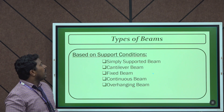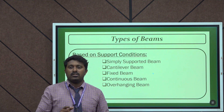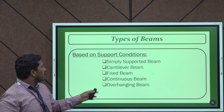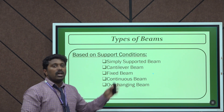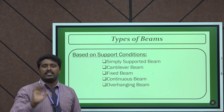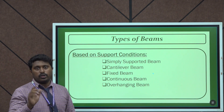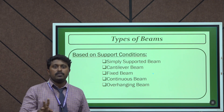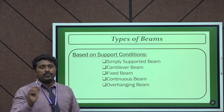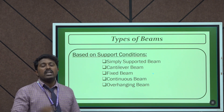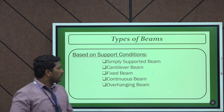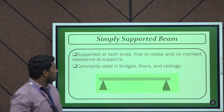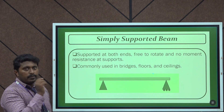The next classification is based on support conditions, which is the most commonly considered type in the engineering field. Based on support conditions, beams are classified into five categories: simply supported beam, cantilever beam, fixed beam, continuous beam, and overhanging beam. We will discuss each one in the following slides. The first is the simply supported beam.